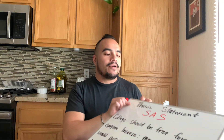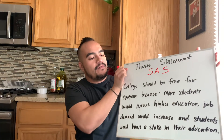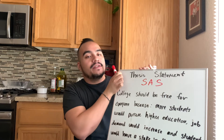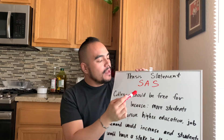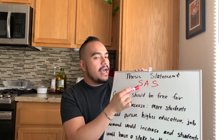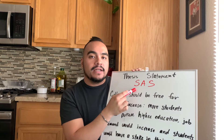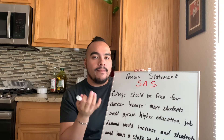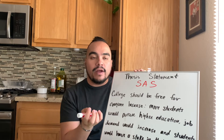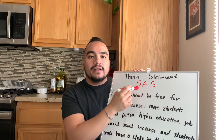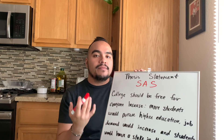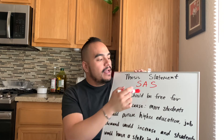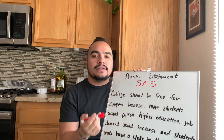When we're taking a look at a thesis statement, we want to make sure we have a little bit of organization with it. So I came up with this acronym: SAS. The three letters — S stands for the subject, the thing that you're talking about, the main idea. The A is the argument, your position that you're taking with a particular thesis. And then finally, the last S is your support.